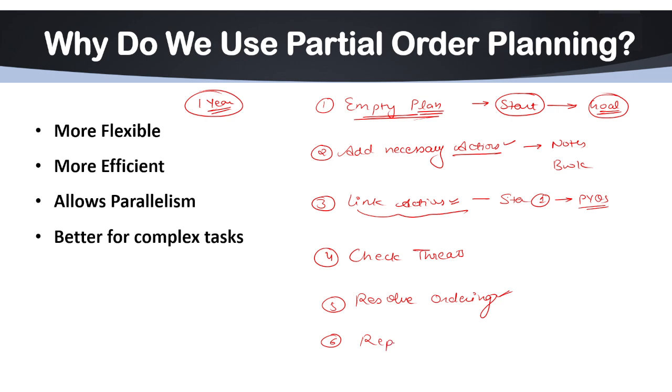The sixth step is to repeat the task. Until all preconditions of all actions are satisfied, we have to repeat the same task again and again. Because of this repetitiveness, partial order planning also follows reusability property. The same partial plan can work in different situations. That is called reusability.